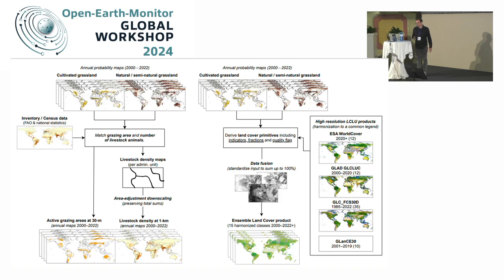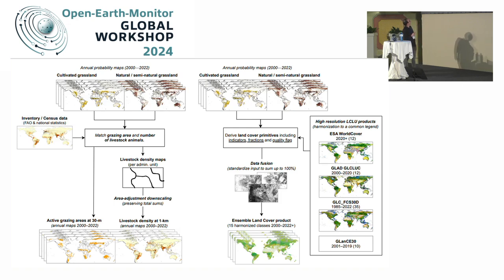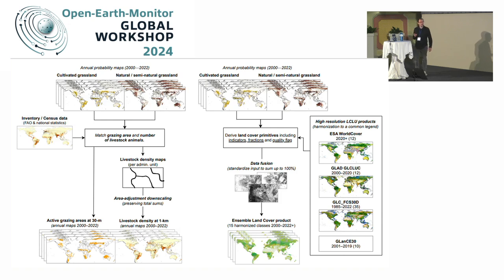The first application is integration with our livestock density maps. Once we have both, we can merge these two maps to identify active grazing areas — crossing livestock densities with grassland products, though there is a resolution mismatch that needs harmonization. The other application is the ensemble land cover product that Tom already discussed: harmonizing different land cover products that exist today, including the grassland maps, to provide a seamless land cover map considering all ongoing initiatives.